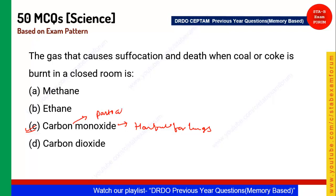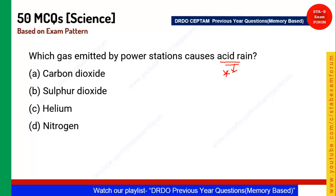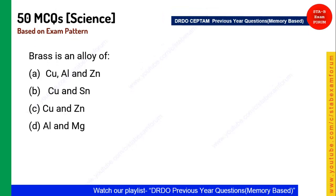Next question: Which gas emitted by power stations causes acid rain? The answer is sulfur dioxide. Sulfur dioxide is the main cause of acid rain and is generally released by power stations.